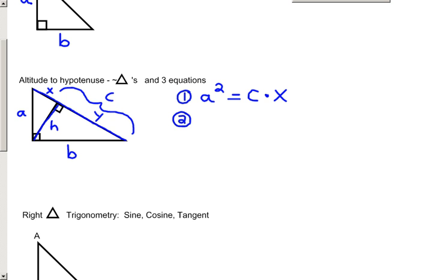The second equation would be the same using the other leg. The leg squared equals the entire hypotenuse times the adjacent piece.